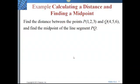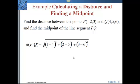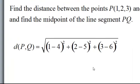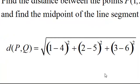We want to find the distance between points P(1, 2, 3) and Q(4, 5, 6). The distance is the square root of (1 minus 4) squared, plus (2 minus 5) squared, plus (3 minus 6) squared, which when reduced is 3√3.